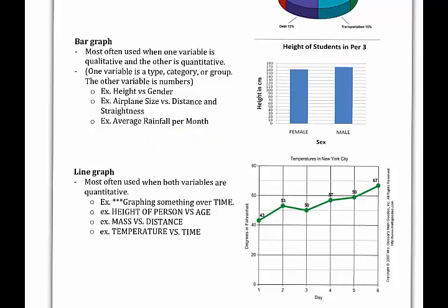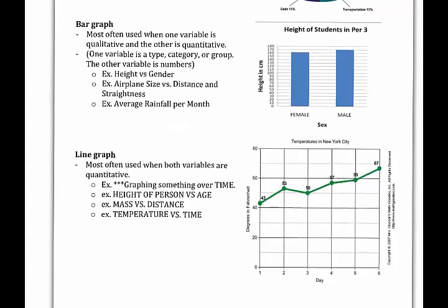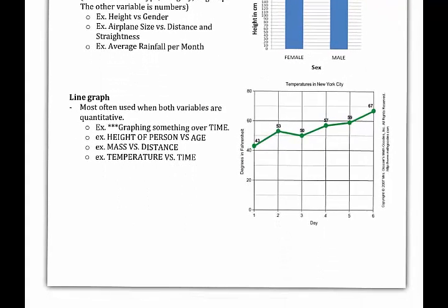Now a line graph is going to be where both variables are going to be numbers or quantitative. Basically, when you're graphing something over time, anything over time is going to be a line graph, or if you're talking about height versus age, mass versus distance, temperature versus time - those types of things. Whenever you have time along the bottom, in this case it's days, time is in days, or degrees in Fahrenheit, you're going to have a line graph for that.